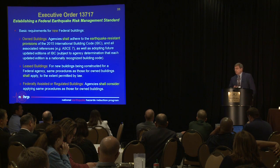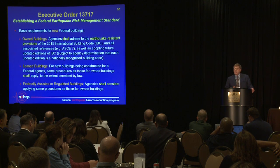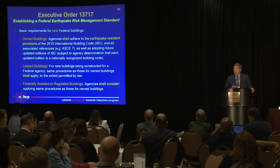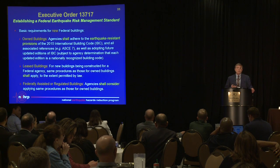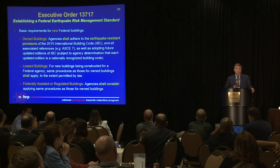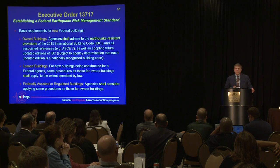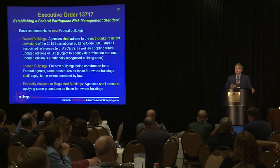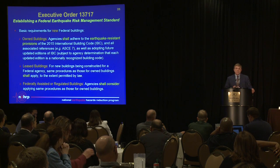For new construction, it directs that agencies building or constructing buildings they will own shall use the International Building Code for their design and construction standards, which also references ASCE 7. This updates what was provided in Executive Order 12699, which was written when we still had three regional building codes around the country — a tremendous leap forward in guidance for federal agencies.